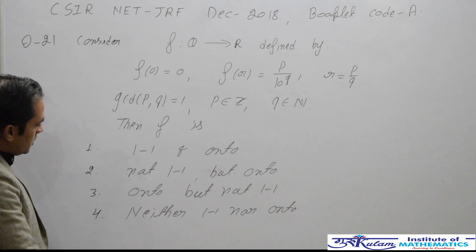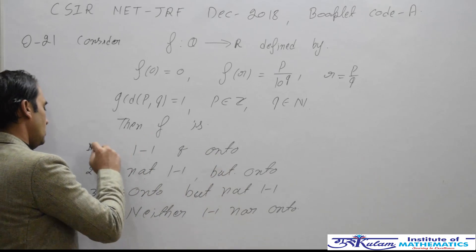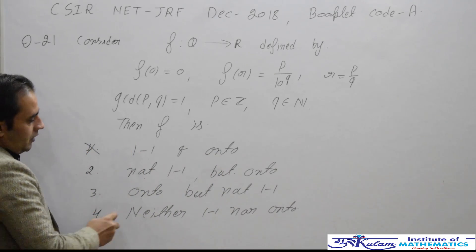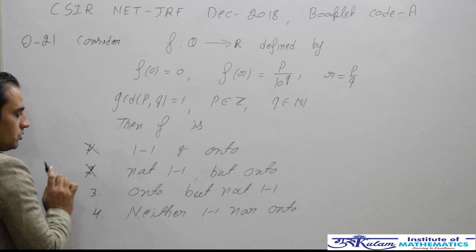According to the four options, the first option says the function is onto, so definitely this is incorrect. The second option says not one-to-one but onto, so the second option is also incorrect.